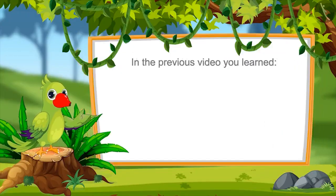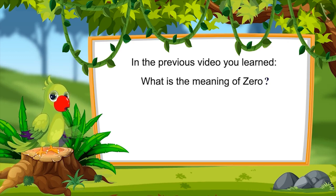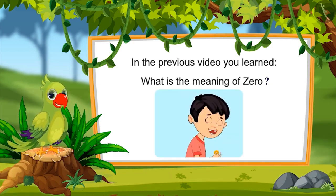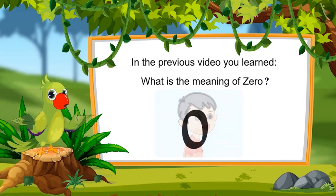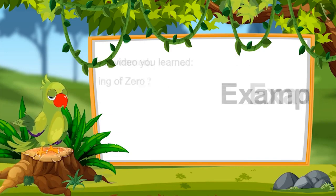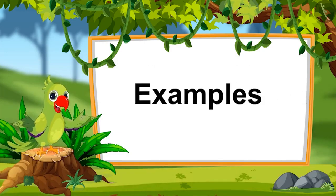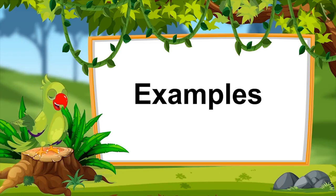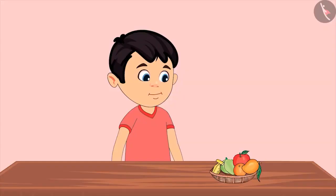So children, in the last video, you learned what is the meaning of zero. And when there is not a single object left, it is called zero. Children, in this video, we will see some examples of zero, in which we will develop an understanding of objects decreasing one by one.